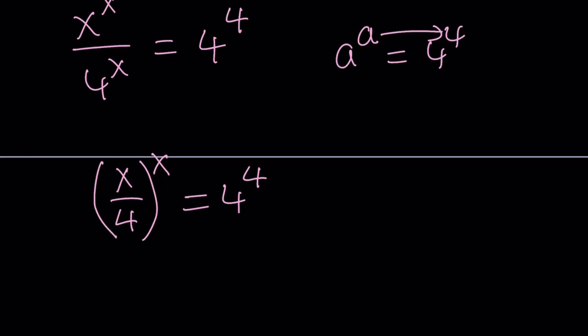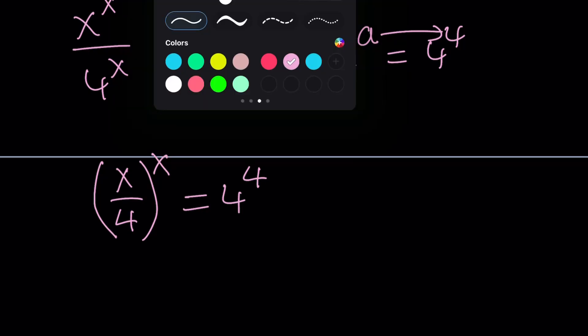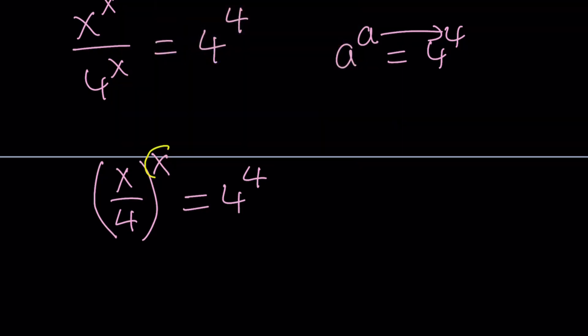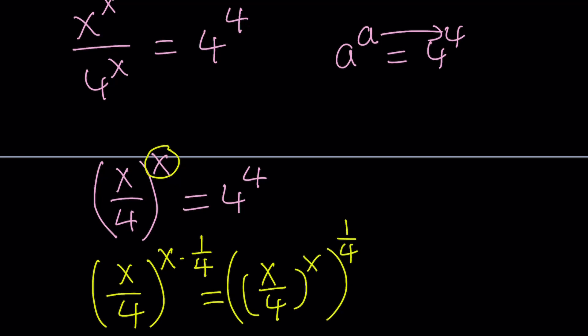So here's what we're going to do. We're going to raise both sides to the power 1 fourth. Why? Because I want to turn the exponent into x over 4, and I can do that by multiplying it by 1 fourth. But what does multiplying the exponent by 1 fourth mean? So if you have x over 4 to the power x times 1 fourth, this is actually equivalent to x over 4 to the power x to the power 1 fourth. Make sense? You take this and raise it to the power 1 fourth.